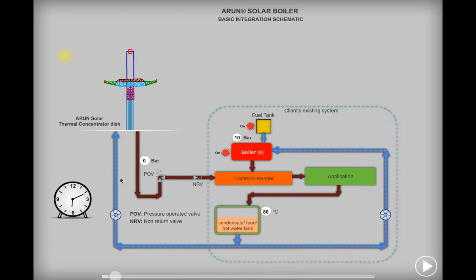The basic aim of the control system on the solar side is to deliver steam from the Arun solar boiler to this existing boiler header. The Arun solar concentrator dish automatically tracks the Sun from morning to evening. The solar radiation falling on the reflecting collector surface is concentrated at a single point at which the receiver is placed. The receiver coil at the focus of the dish transfers the heat of the Sun to the heat transfer medium, which is water in this case.